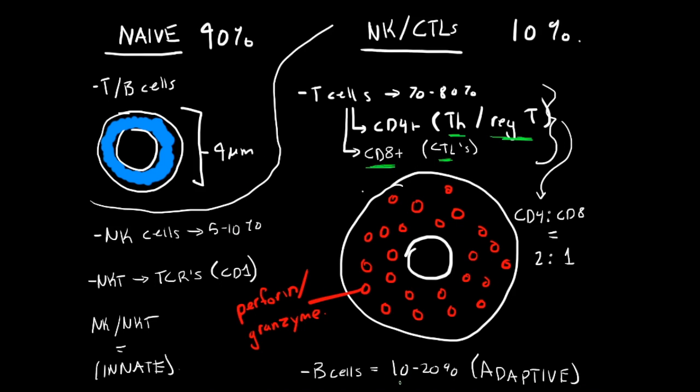Then you have your B cells, which make up about 10 to 20 percent, which are part of your adaptive immune response. Then you have your natural killer cells, which make about five to ten percent, and then your natural killer T cells. They express functional T cell receptors and they respond to CD1 antigen presentation rather than class one and class two MHC molecules, which we'll see later on is very important.